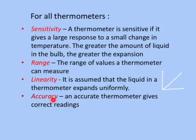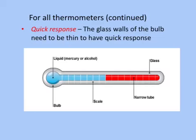Accuracy: an accurate thermometer gives correct readings. Quick response: the glass walls of the bulb need to be thin to have a quick response. That is because the heat can get through very quickly.